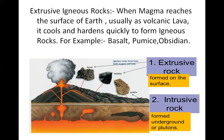The second type is extrusive igneous rock. When magma reaches the surface of the earth, usually as volcanic lava, it cools and hardens quickly to form igneous rock. Examples are basalt, pumice, and obsidian. As you can see in the picture, extrusive rock is formed on the surface, while intrusive rock is formed under the ground.